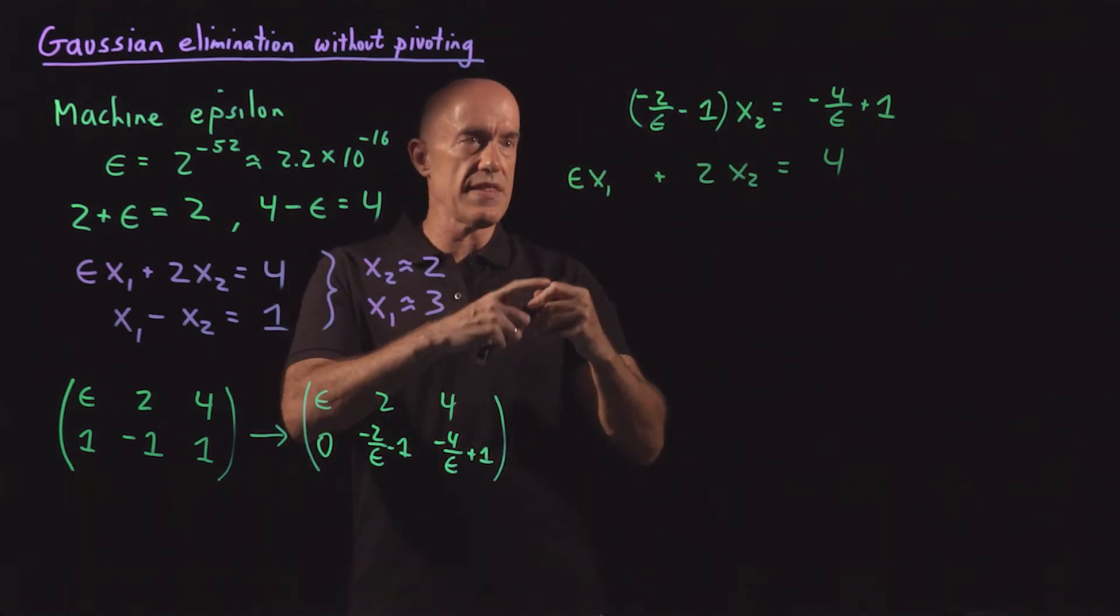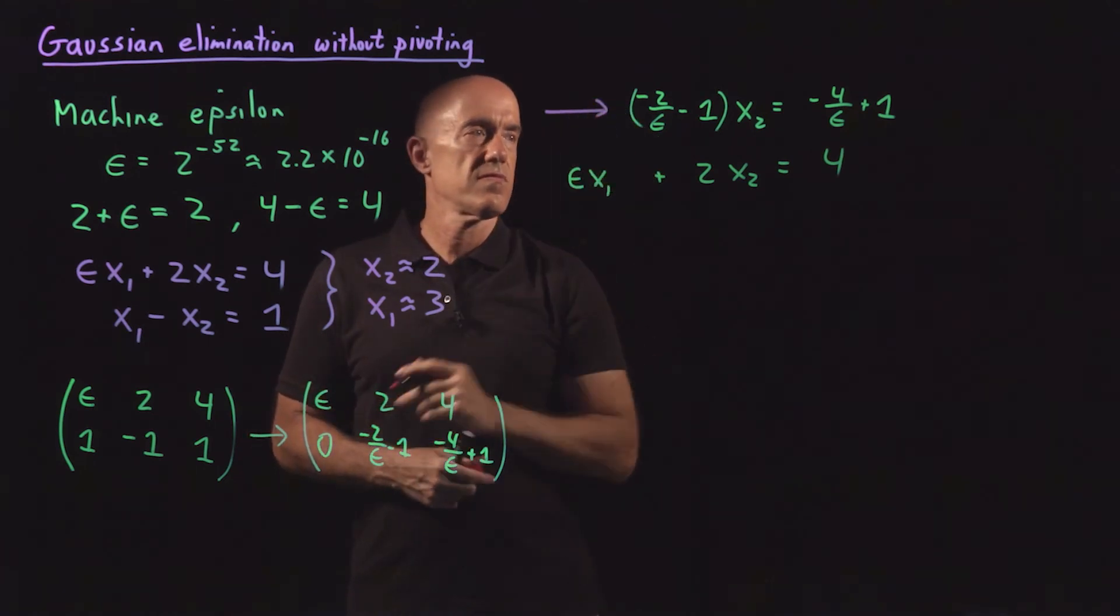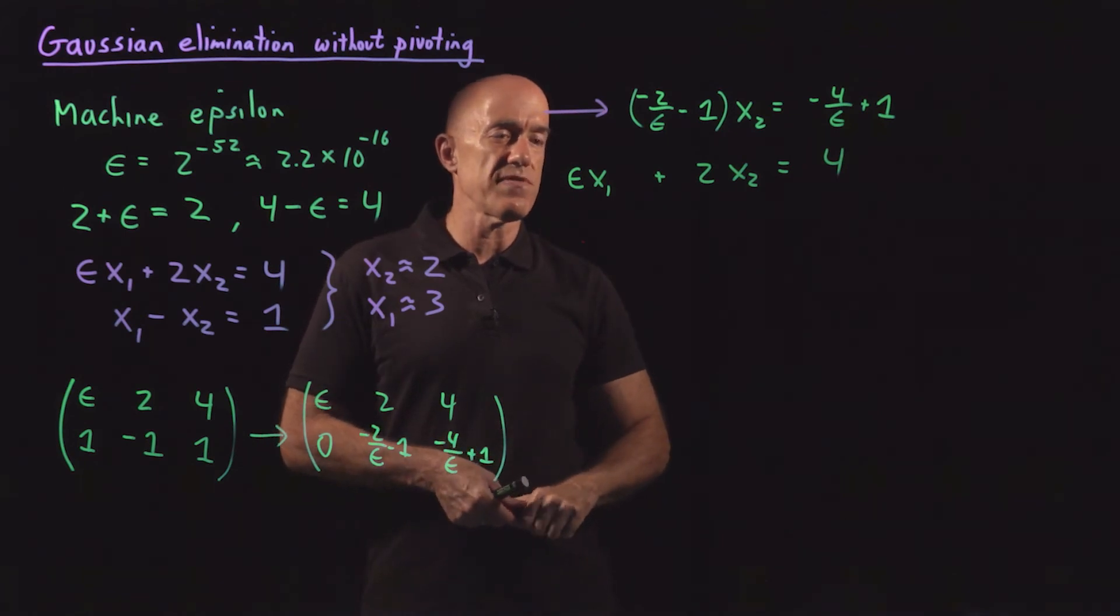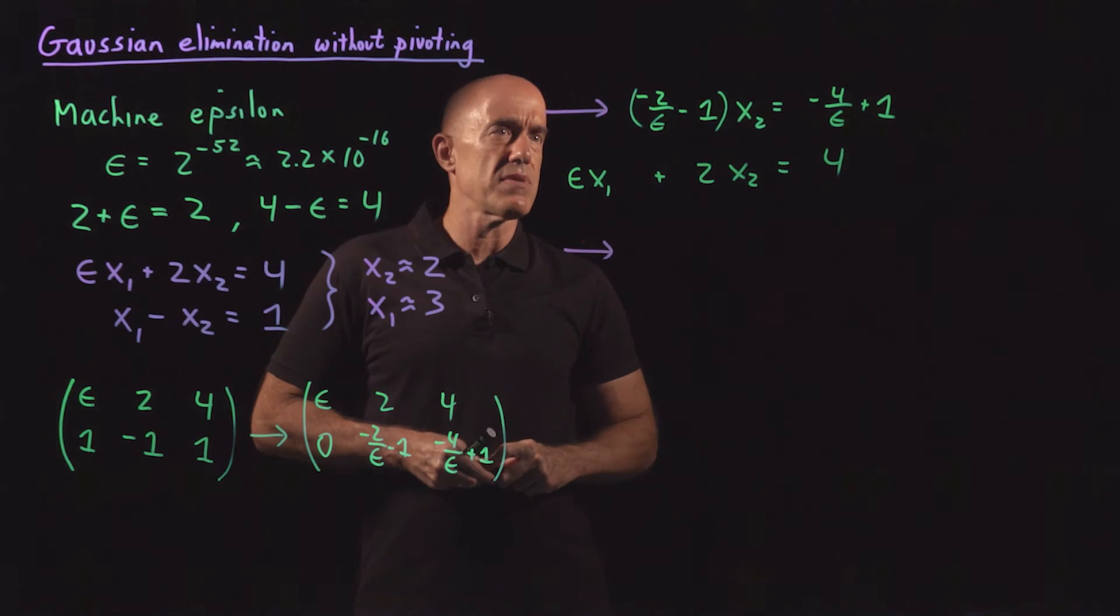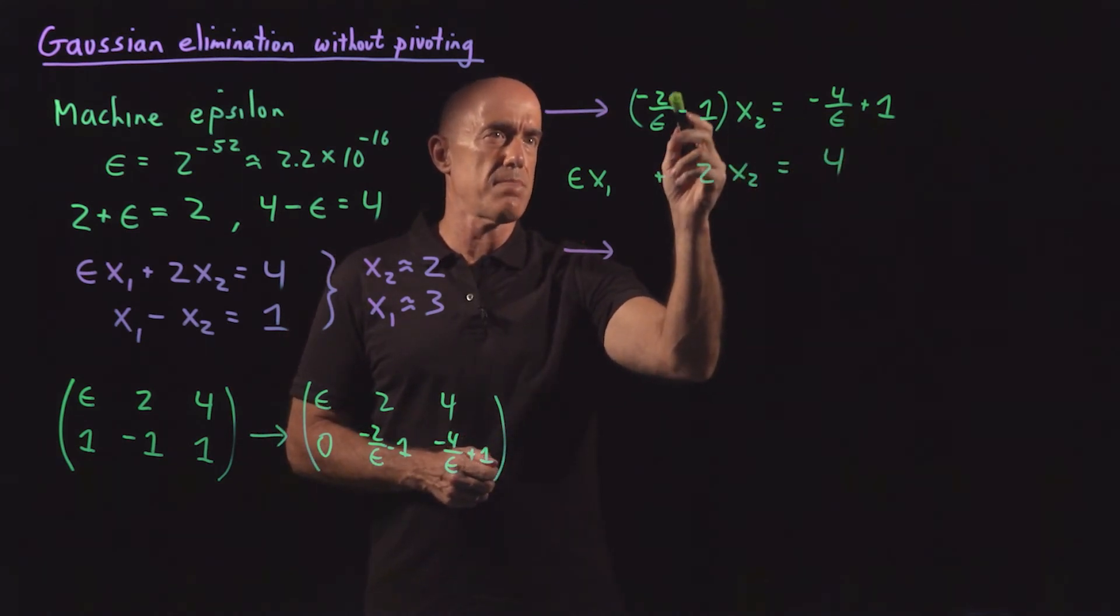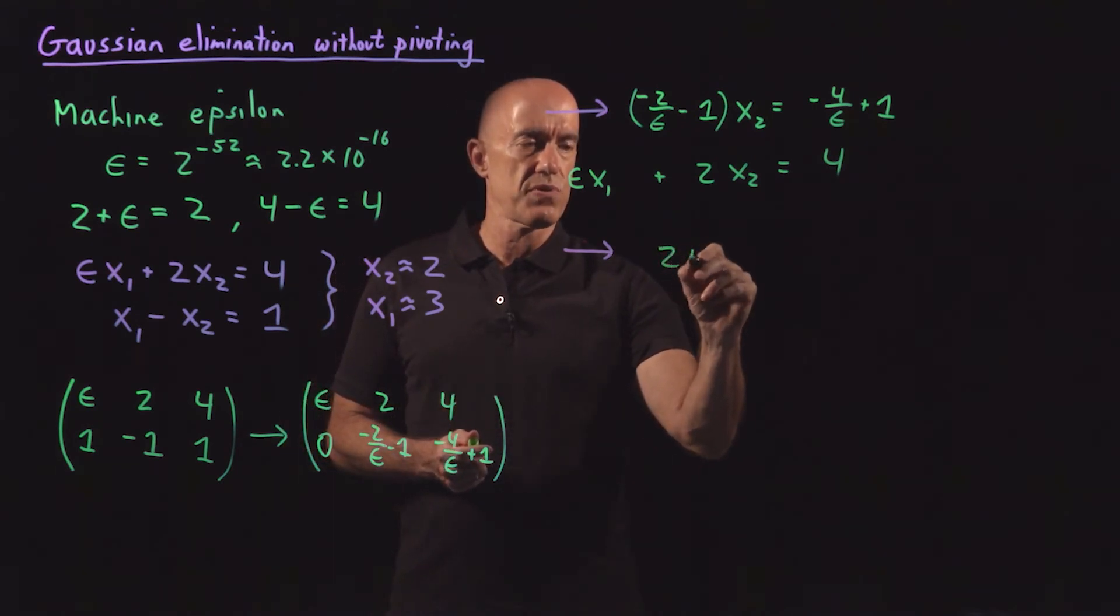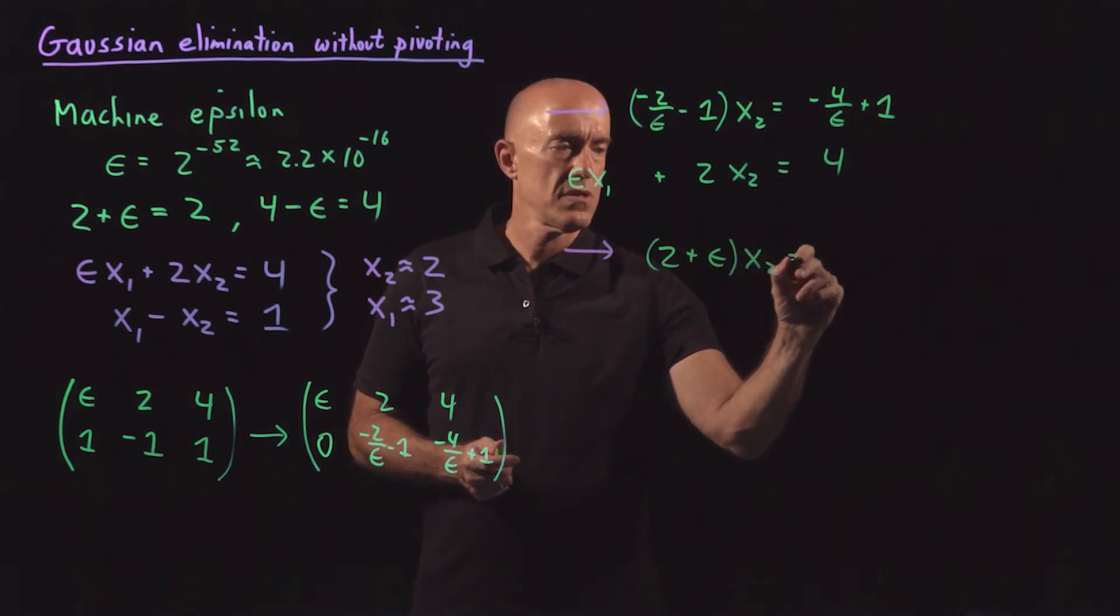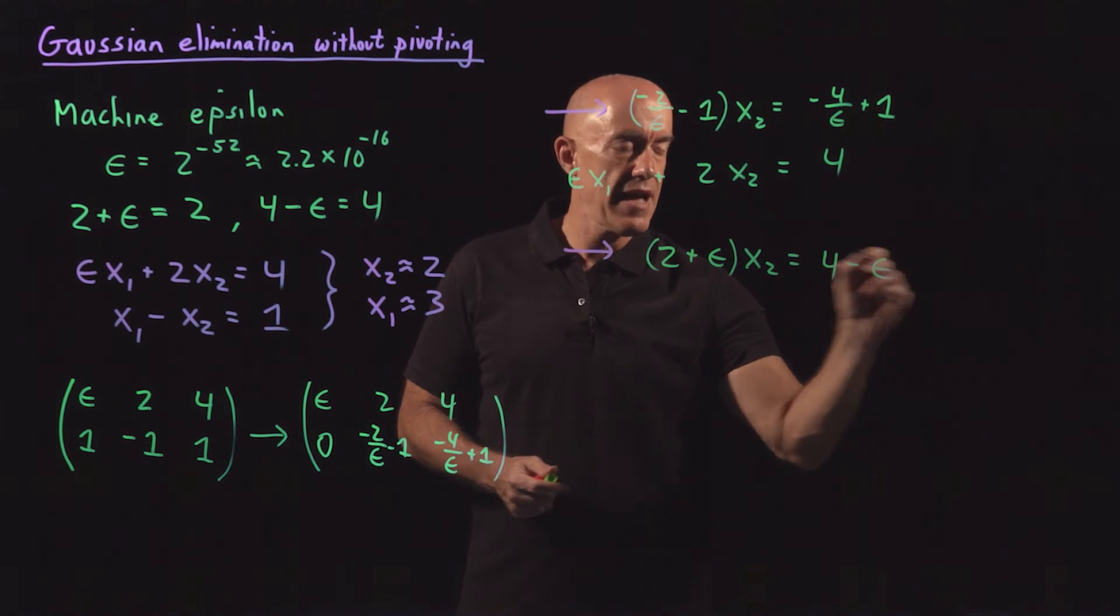So I wrote it in that order because we're going to look at the first equation first. I want to simplify that equation. So I want to clear the denominator so I can multiply both sides of this equation by minus epsilon. So then we end up with 2 plus epsilon times x2 equals 4 minus epsilon.